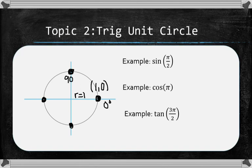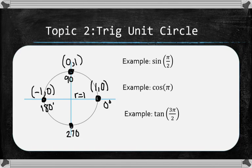At 90 degrees, the x is 0 and the y is 1. At 180 degrees, the x is negative 1 and the y is 0. And at 270 degrees, the x is 0 and the y is negative 1.